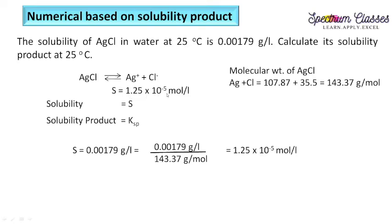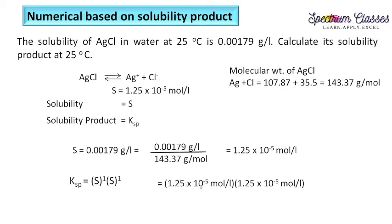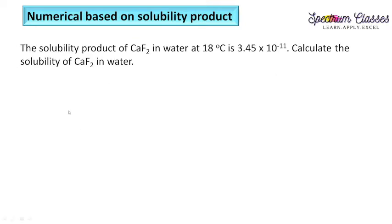So solubility s = 1.25 × 10⁻⁵ mol/L. The formula for Ksp is: Ksp = [Ag⁺][Cl⁻], each raised to the power of their coefficient, which is 1 for both. So Ksp = s × s = s². Putting in the value of s: 1.25 × 10⁻⁵ multiplied by itself gives Ksp = 1.56 × 10⁻¹⁰ mol² per liter squared. This is the answer.